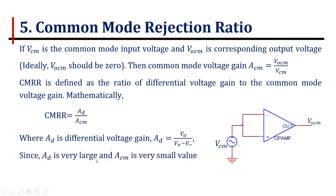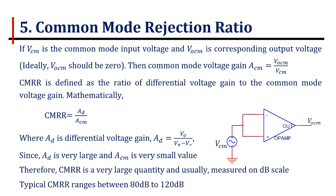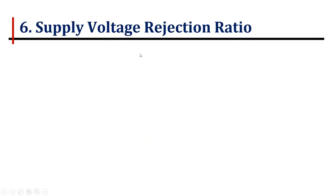Since AD is very large and ACM is very small, therefore CMRR is very large quantity and usually measured on the dB scale. The typical value of CMRR is 80 to 120 dB.